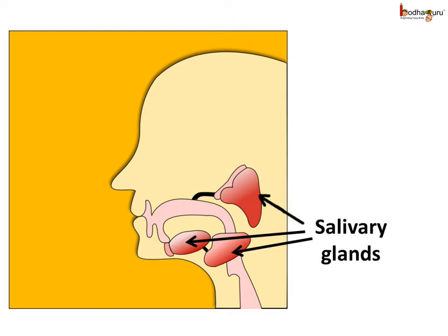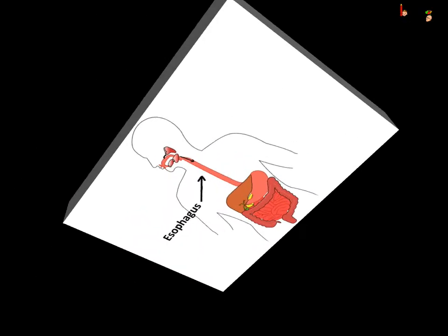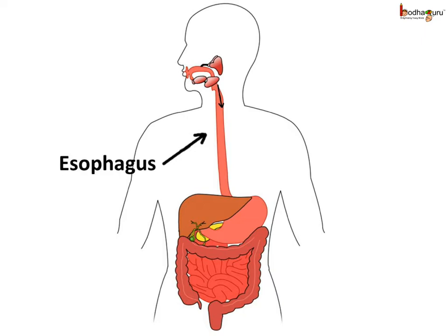When we chew the food, it gets mixed with saliva, which we commonly call the spit. The salivary glands release saliva in the mouth. The saliva contains the enzyme which helps in breaking down starch, which is one kind of carbohydrate, into sugar. The saliva also makes the food slimy so that it can pass through the food pipe or the esophagus easily.